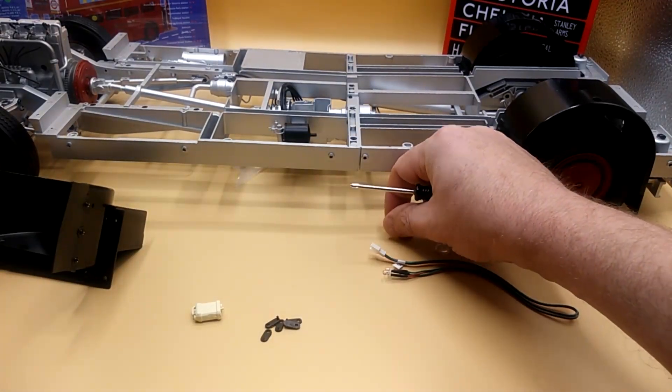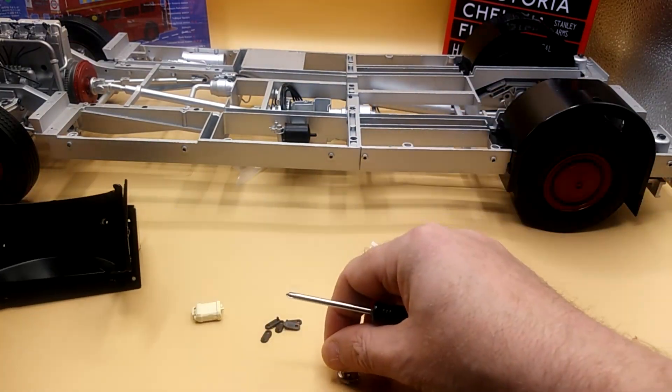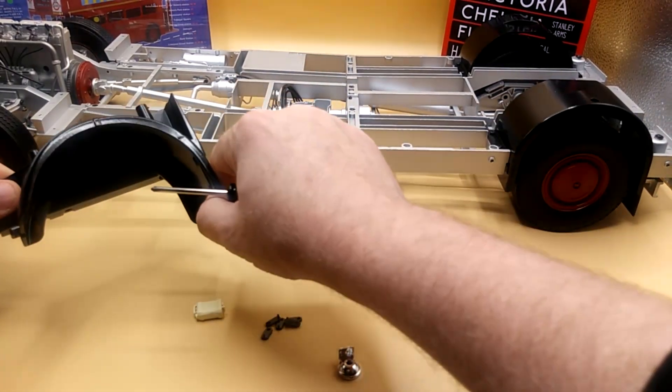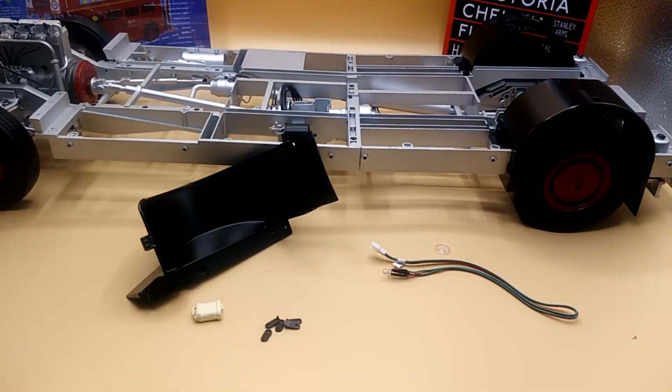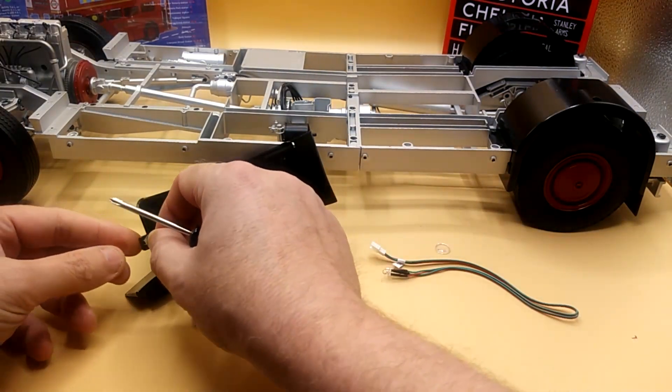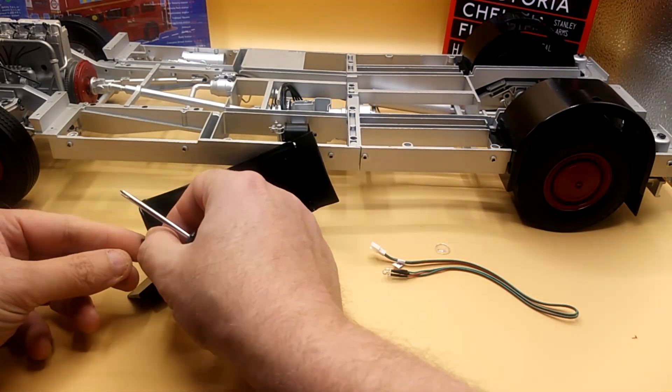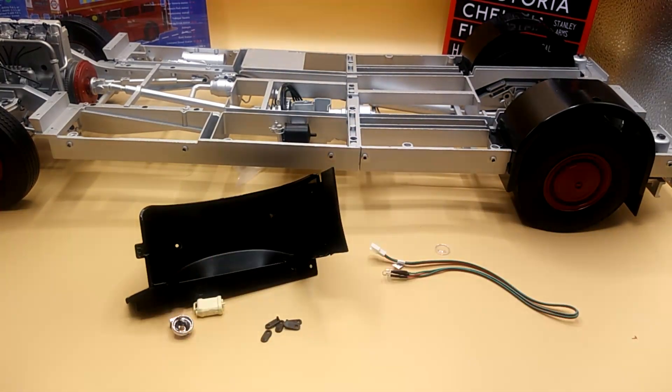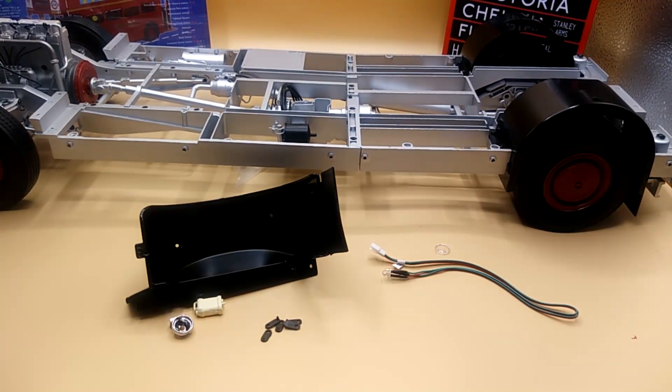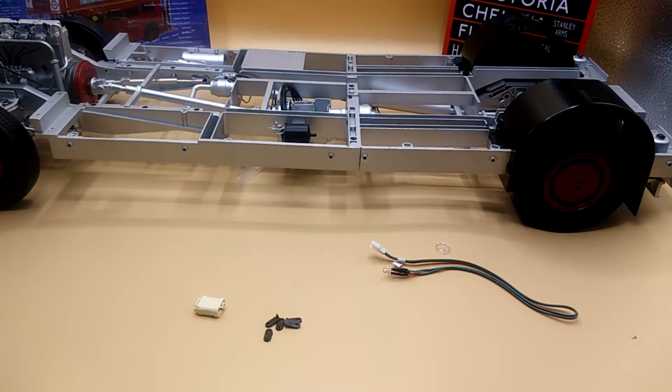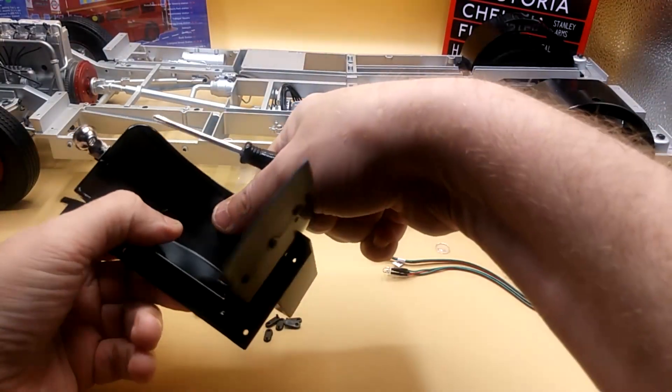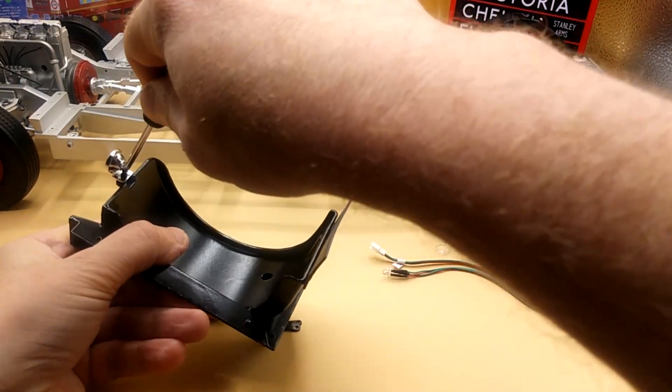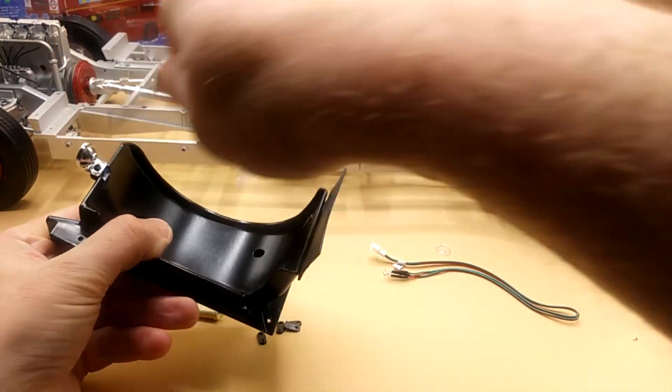And now we put the fog lamp in. That will just go... There's a locating lug and a hole. And that will be secured in with a morning screw! AM screw! Like so!